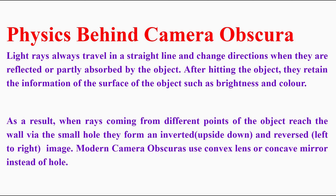They form an inverted and reversed image. A reversed image is left to right, and inverted means upside down. Modern camera obscuras don't use a simple hole — they instead use a convex lens or concave mirror, due to their converging properties.